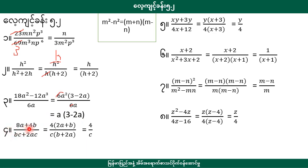HA plus 4B by BC plus 2A is the same. This is the same. S1 plus 3Y is the same. So here first.